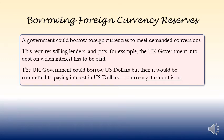Borrowing foreign currency reserves: a government could borrow foreign currencies to meet demanded conversions. This requires willing lenders and puts, for example, the UK government into debt on which interest has to be paid. The UK government could borrow US dollars, but then it would be committed to paying interest in US dollars — a currency it cannot issue.